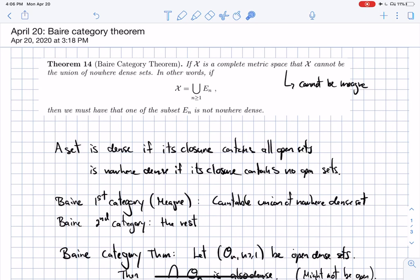In other words, if I write X as the union of some sets En, not necessarily disjoint, then one of these subsets at least is not nowhere dense.